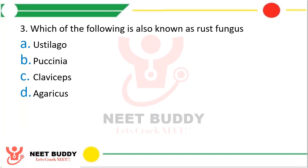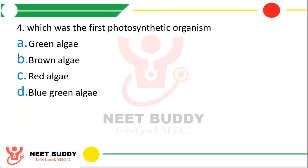Question 3: Which of the following is also known as rust fungus? Option A Ustilago, option B Puccinia, option C Claviceps, or option D Agaricus. The correct answer is option B — Puccinia is also known as rust fungus.